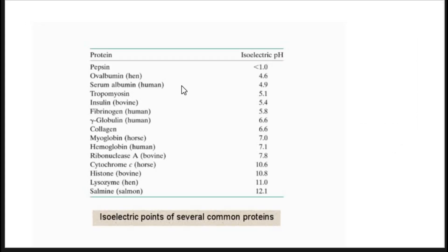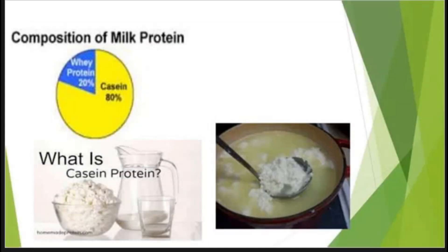The isoelectric points of some common proteins are: pepsin less than 1.0, ovalbumin 4.6, tropomyosin 5.1, serum albumin 4.9, insulin 5.4, fibrinogen 5.8, gamma globulin 6.6, collagen 6.6, myoglobin 7.0, hemoglobin 7.1, ribonuclease 7.8, histone 10.8, and salmine 12.1.